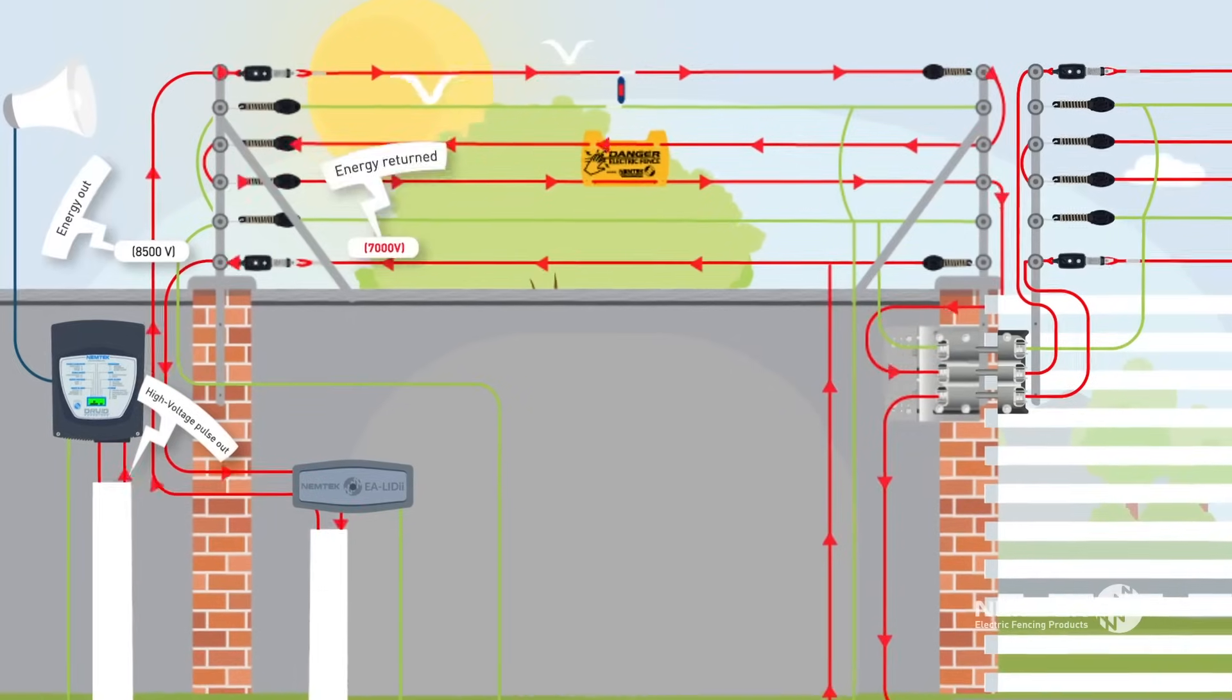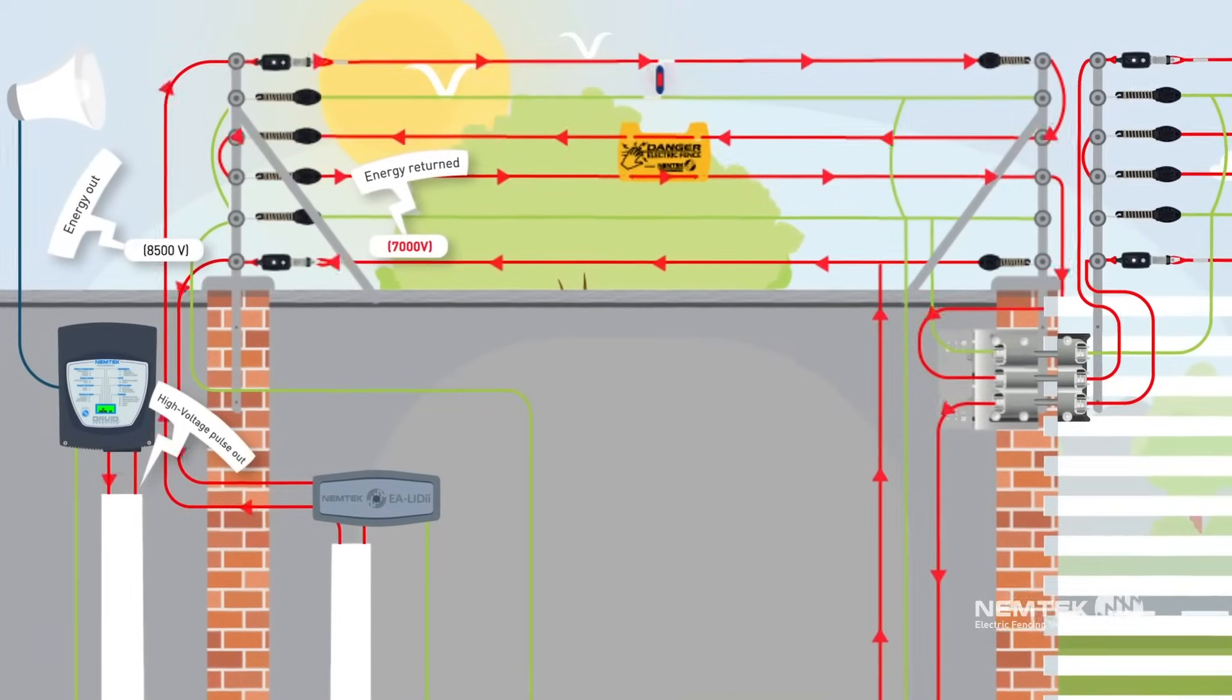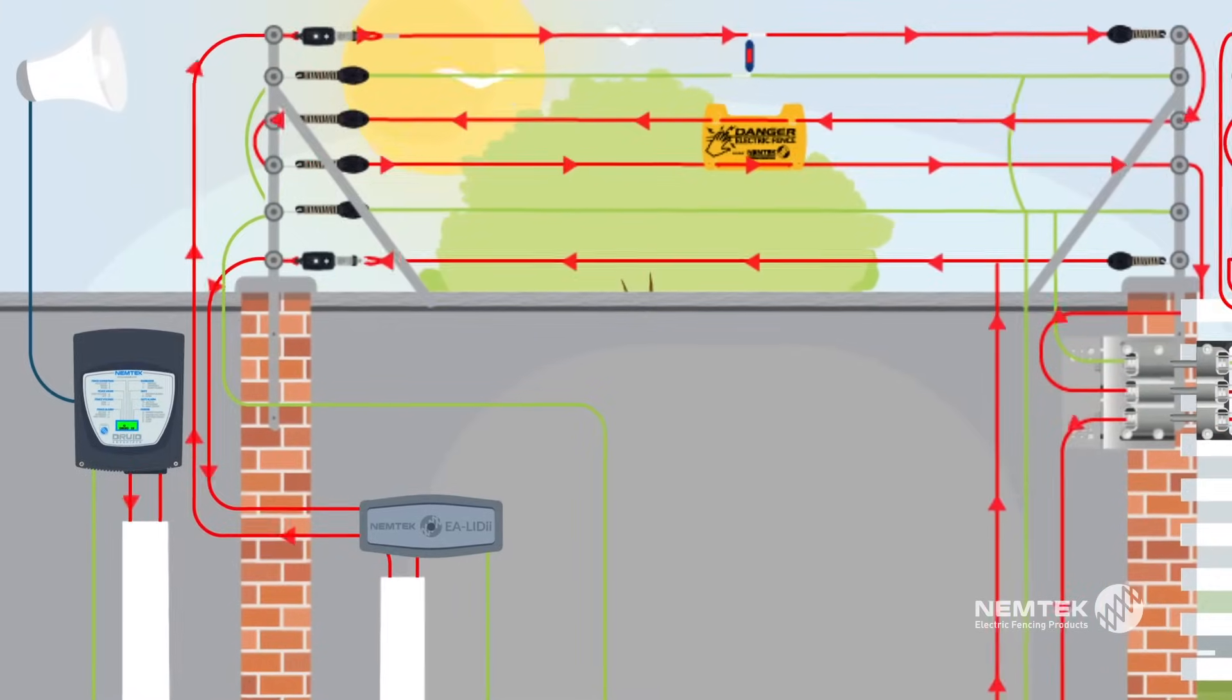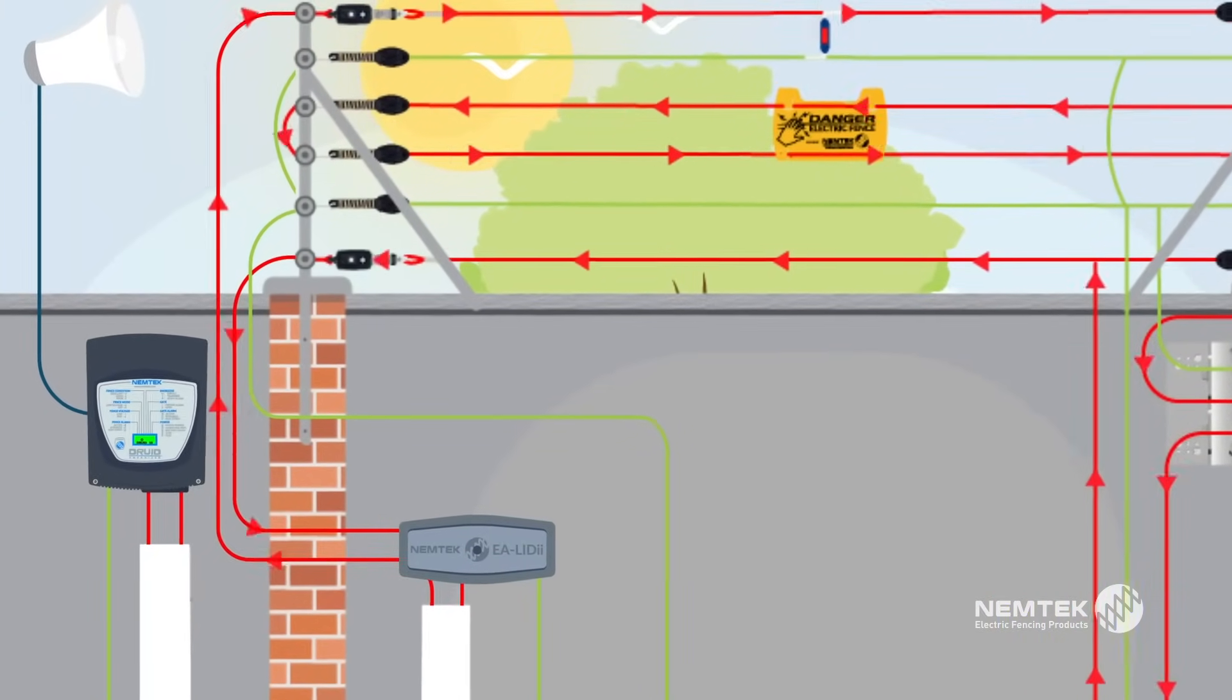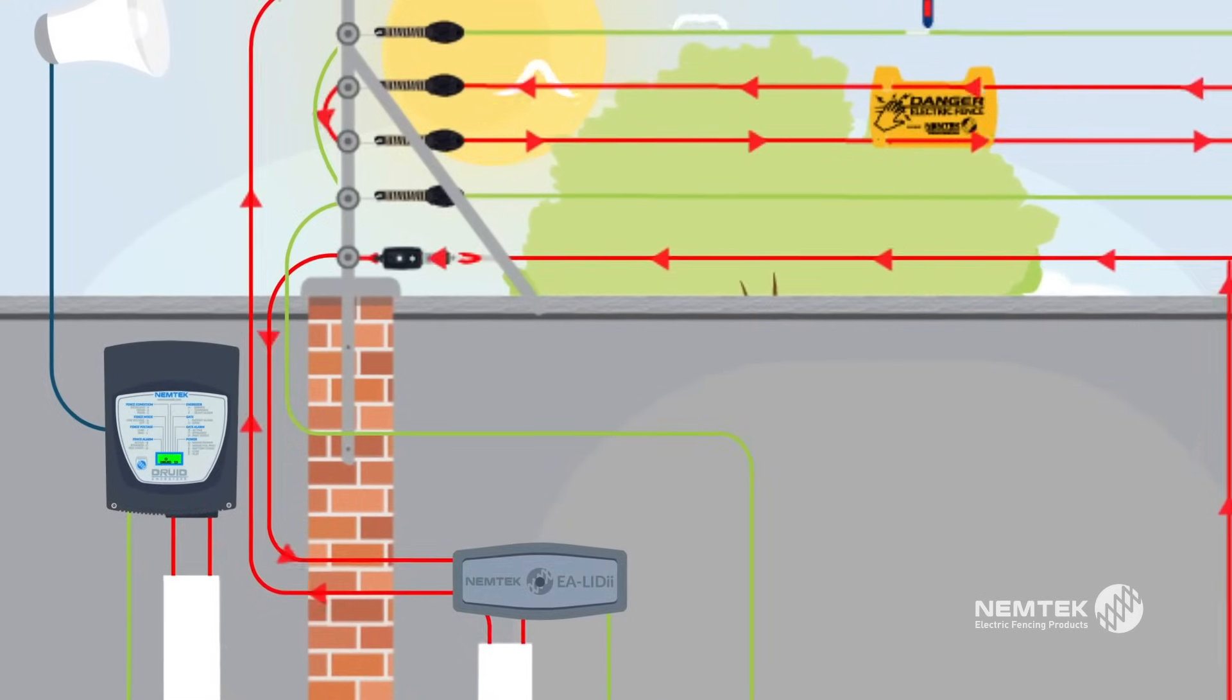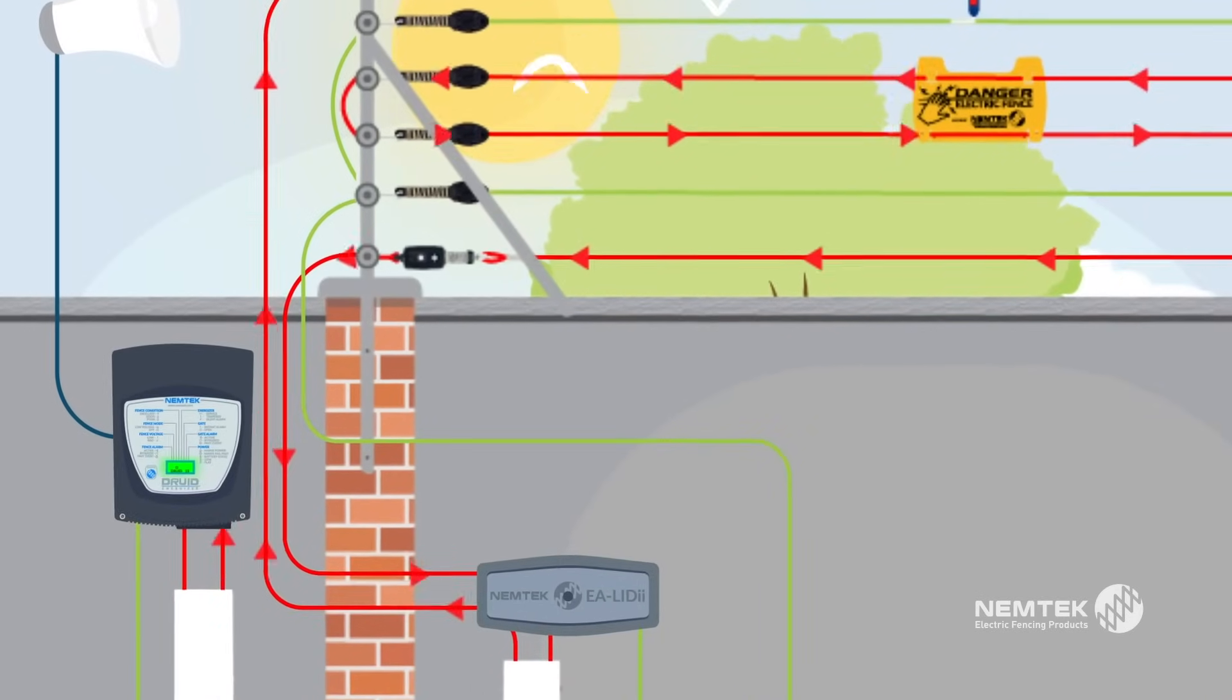The energizer monitors the losses over the length of the fence and determines if they are within acceptable parameters. If the amount of high voltage pulse returning is acceptable, indicating the fence is clear, the energizer display will remain green and not go into alarm.